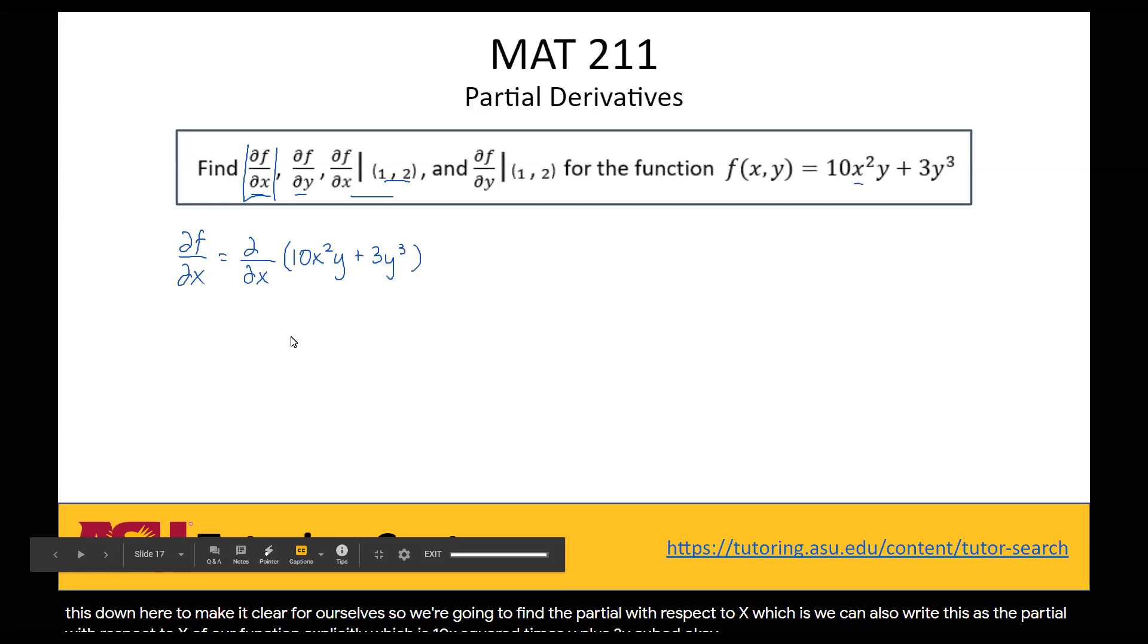Okay, so when we take a partial with respect to x, we're going to treat y as if it is just a regular constant. So it's another constant multiplied against our x here. So it'll be treated the same way as our 10 and our 3. So for our first term, 10x squared y, we're just going to be taking the derivative of the x squared term here, and the other two are just going to multiply on. So we'll have 10 times the derivative of x squared, which is 2x times y, because it's a constant and it's multiplied.